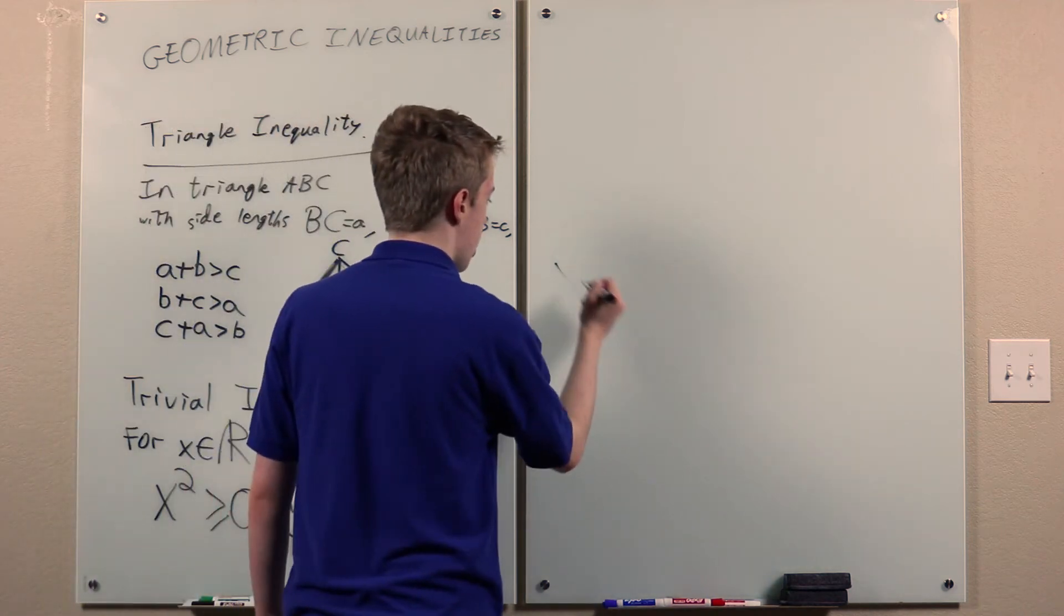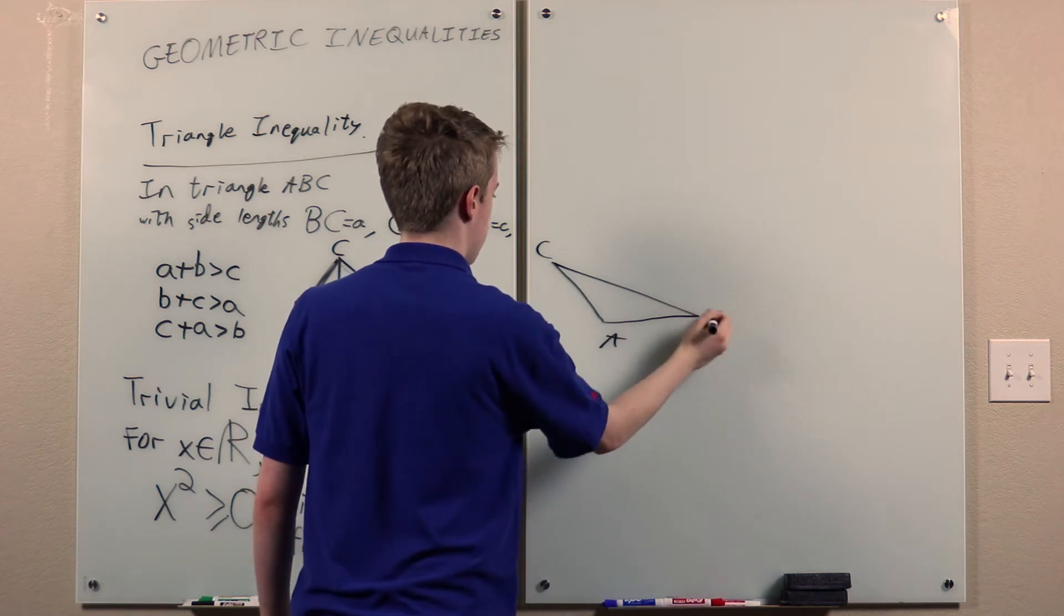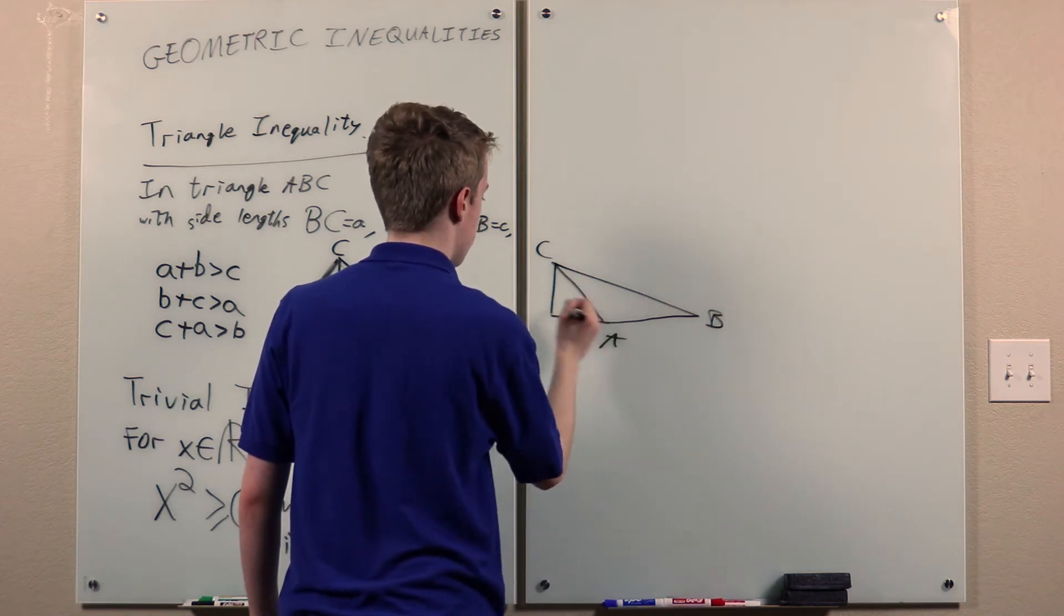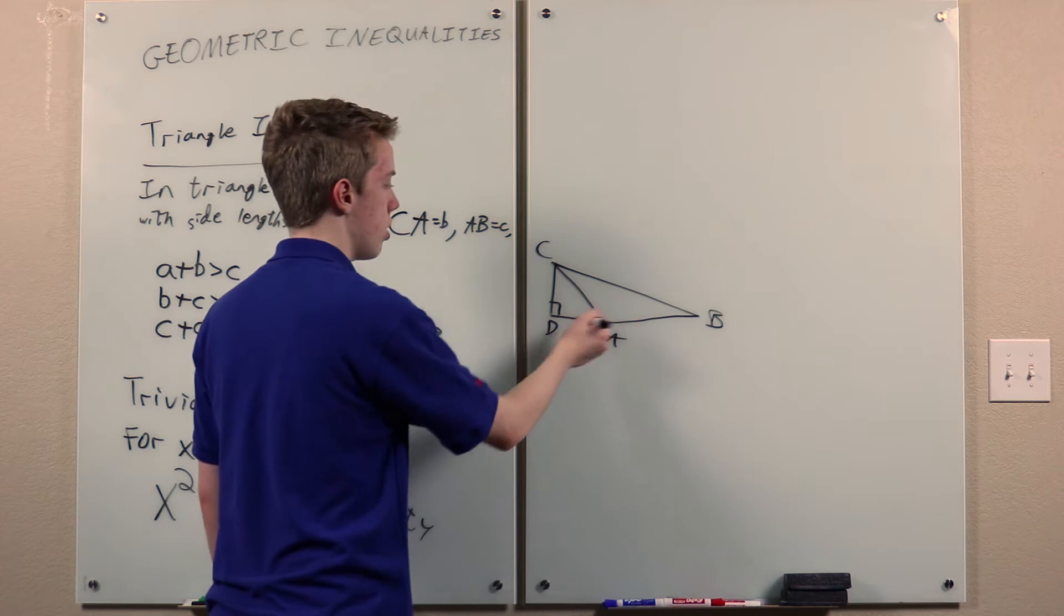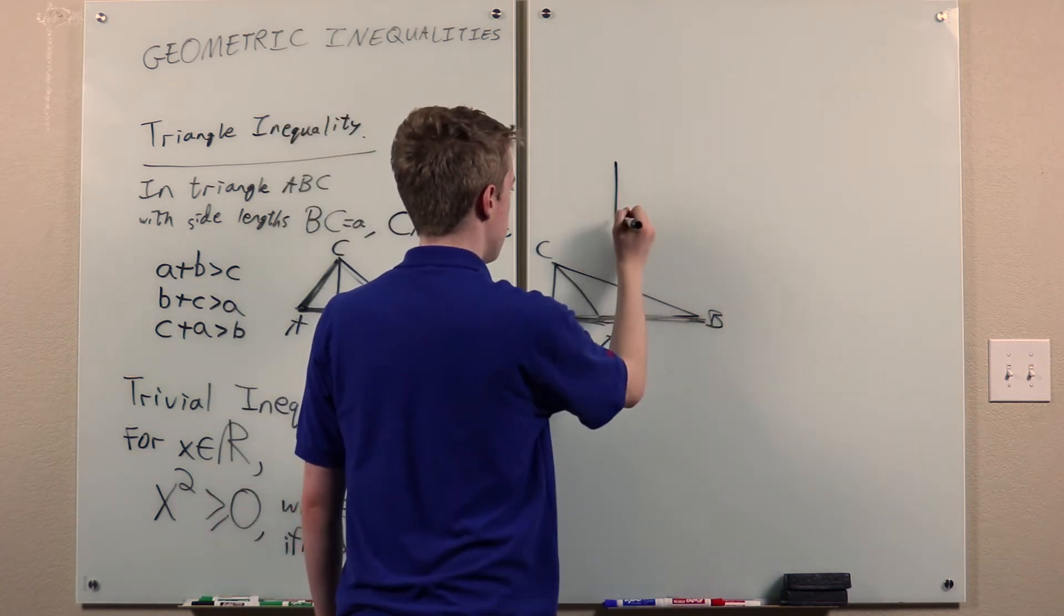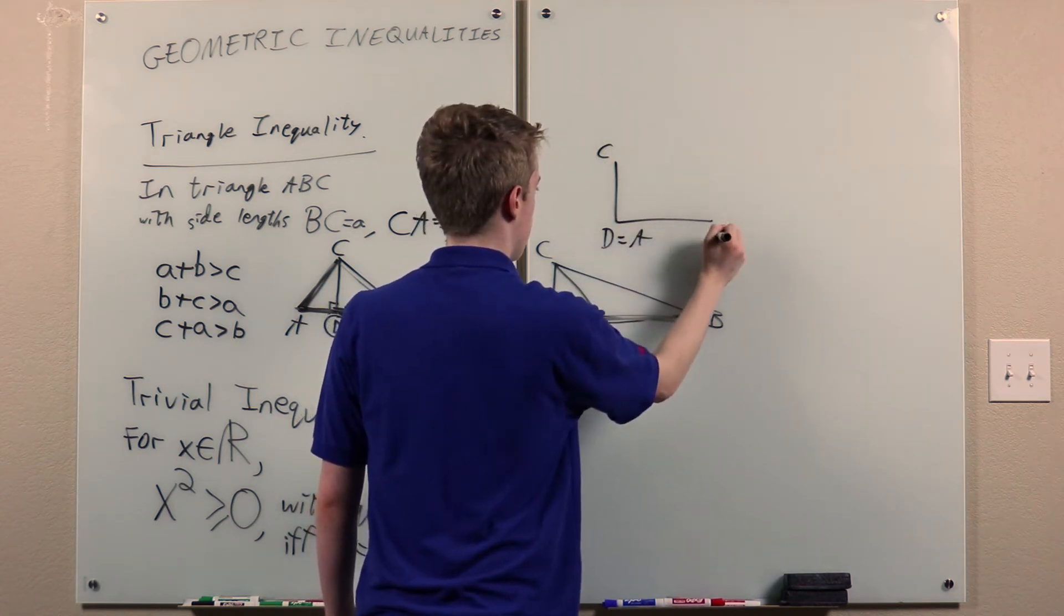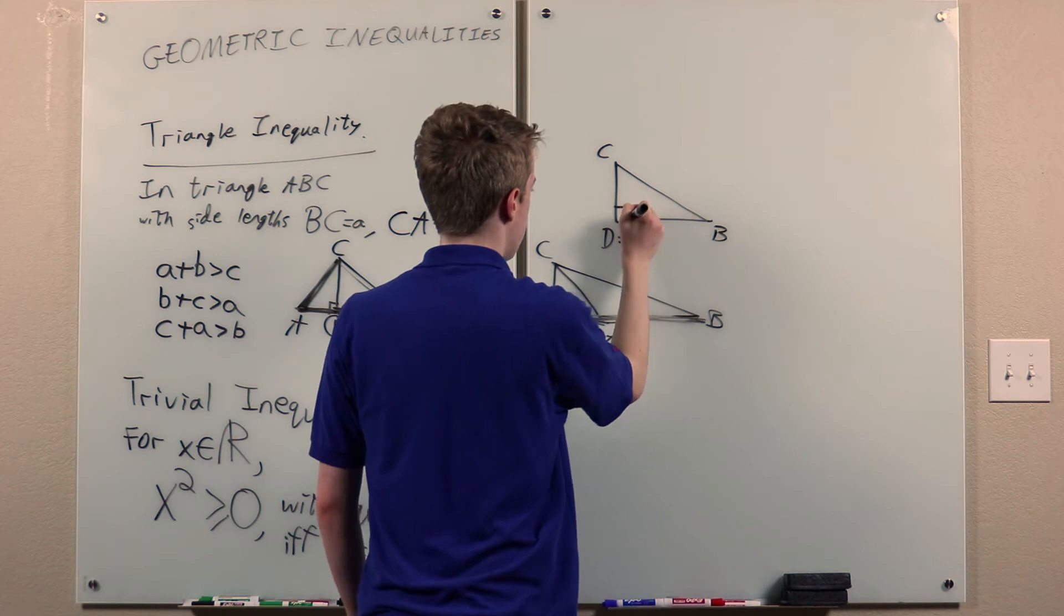Or, we could have a diagram that looks like this. In which case, the sum of these lengths is greater than AB. Or it could be equal if it's a right triangle. So yes, that's the triangle inequality.